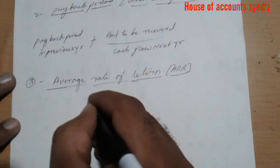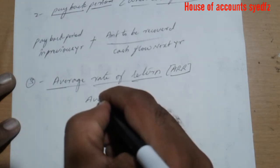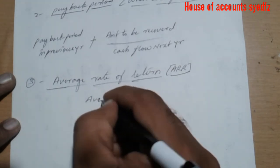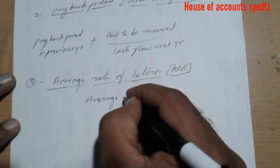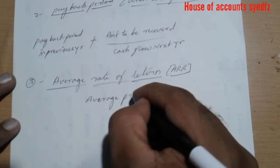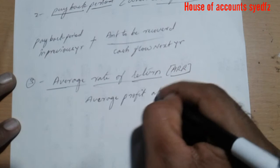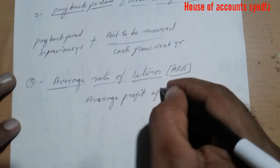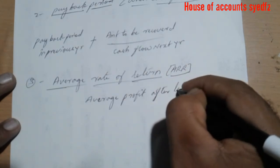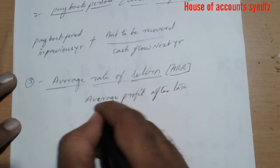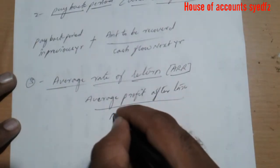The formula for average rate of return is: average profit after tax divided by average investment.